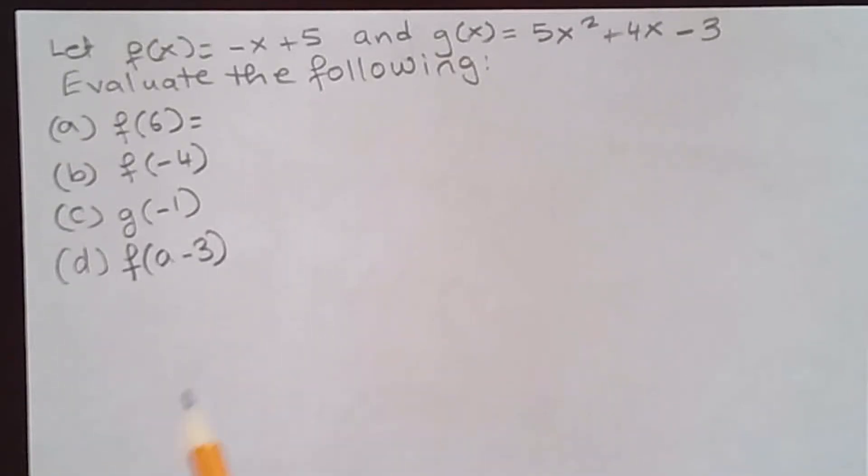Let f(x) = -x + 5 and g(x) = 5x² + 4x - 3. Evaluate the following.